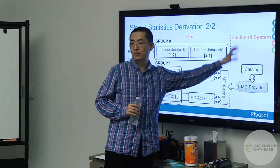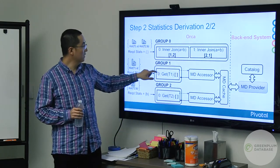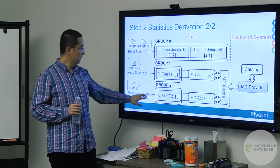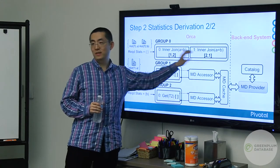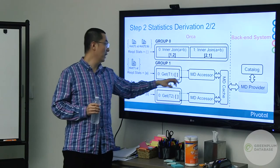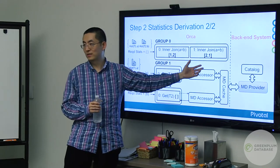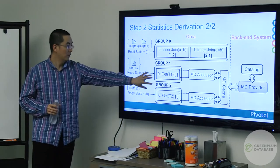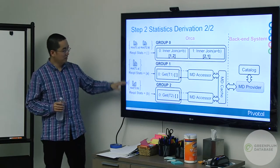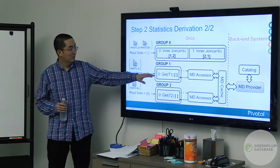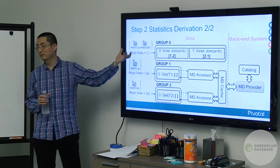For example, when we optimize and have two expressions, we'll check the stats for A and for B. The first time we retrieve them, we store them in the cache. Next time we come to the second plan, the metadata is already in the cache so we reuse it without talking to the host again. Once we have statistics, we do bottom-up computations: group two says here's the distribution of column B, here's the distribution of column A, and the join produces the join cardinality.